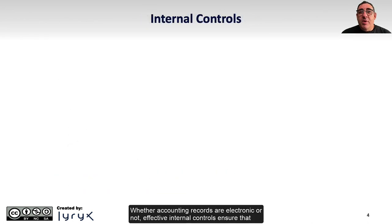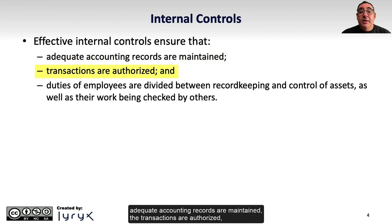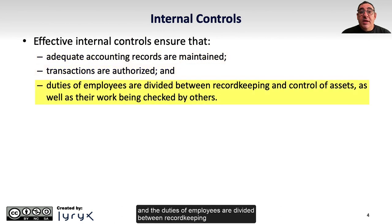Whether accounting records are electronic or not, effective internal controls ensure that adequate accounting records are maintained, that transactions are authorized, and that duties of employees are divided between record-keeping and control of assets, as well as their work being checked by others.